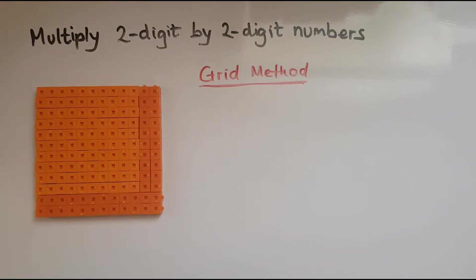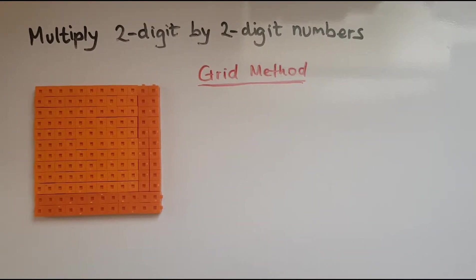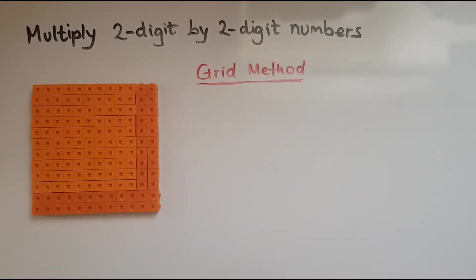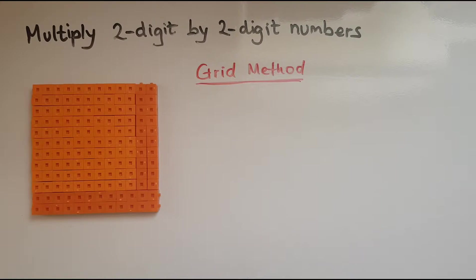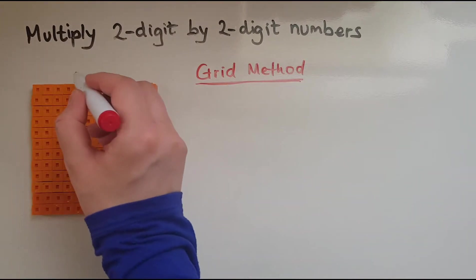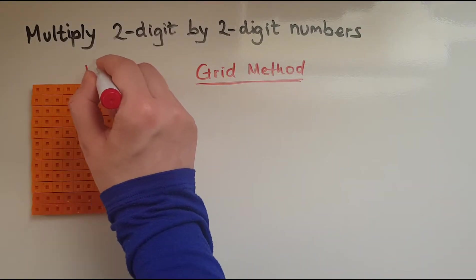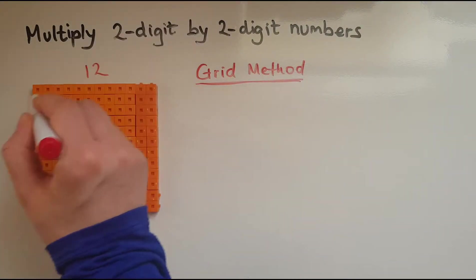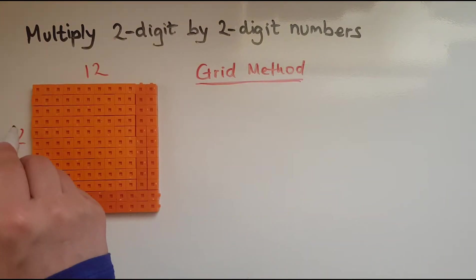In this video we'll look at multiplying two-digit by two-digit numbers using the grid method. What I have shown here using these cubes is multiplication — specifically 12 times 12.